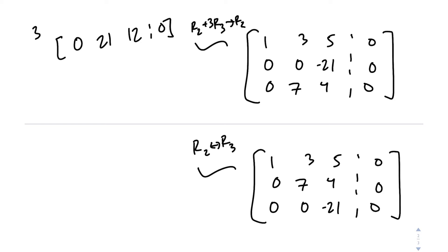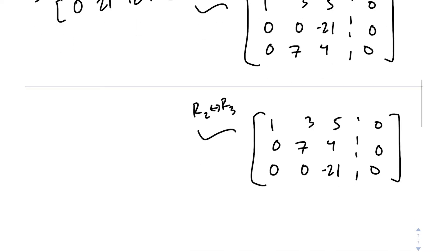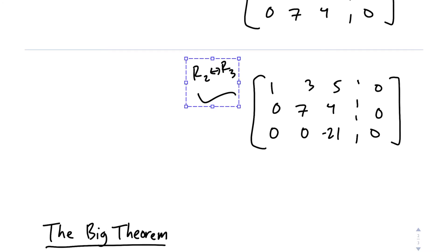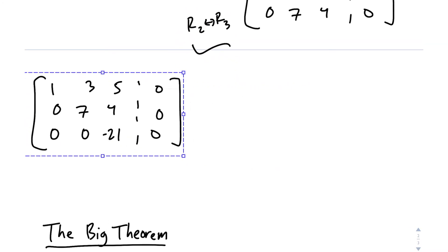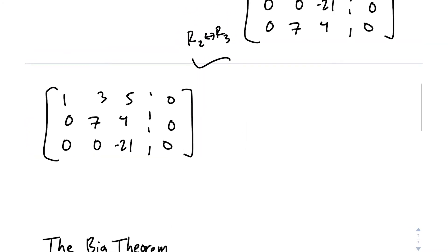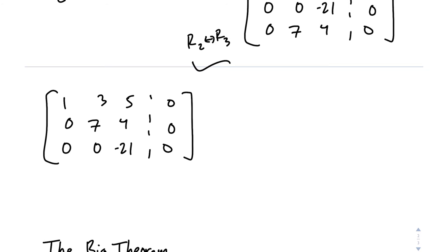So here is our matrix. This is where we figure out whether this is linearly independent. So if we set this up as a system of equations again, we get x1 plus 3x2 plus 5x3 equals 0, 7x2 plus 4x3 equals 0, and then negative 21x3 equals 0.